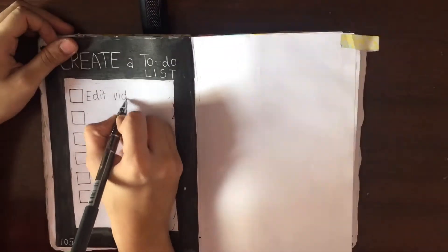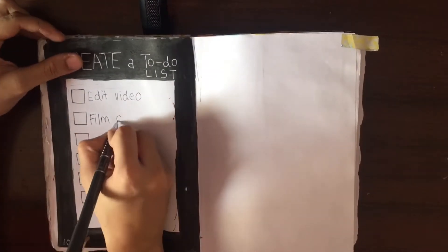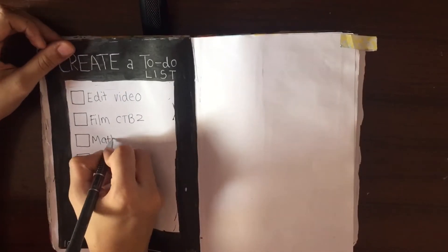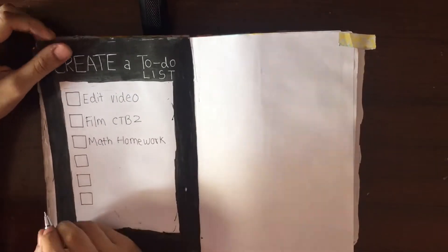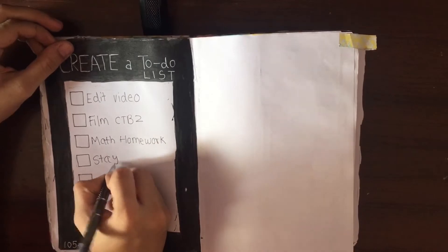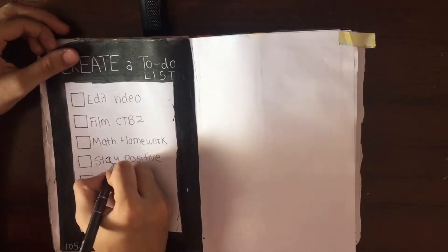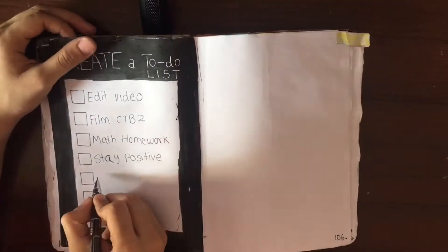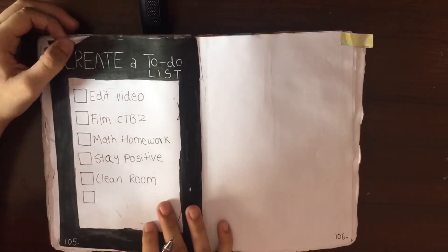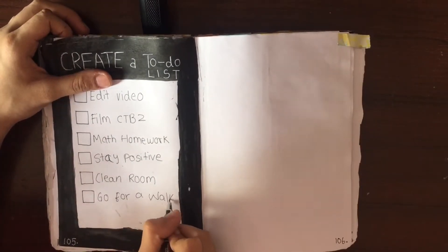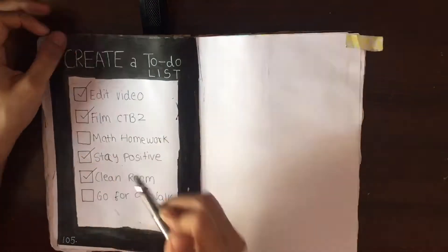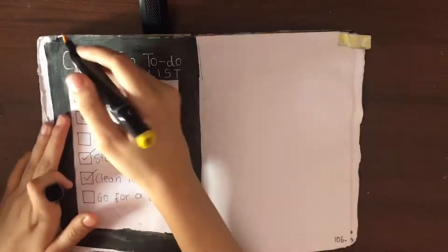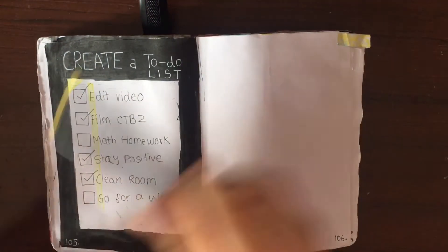Then I just started by writing down my to-do list and since I basically write down to-do lists in my journal every single day, I just took the to-do list from that day and wrote that down, which actually included: edit my video, film CTB2, do math homework, stay positive, clean my room, and go for a walk, which is basically my basic to-do list.